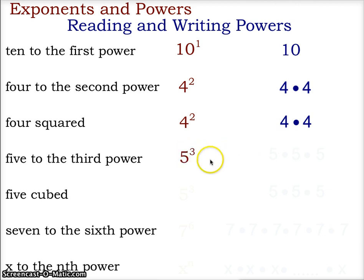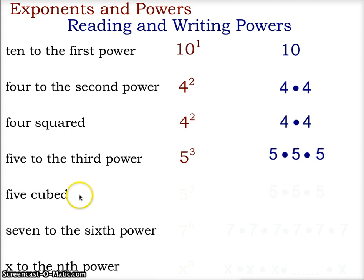Our next example is 5 to the third power. 5 is the base and 3 is the exponent, giving us the expression 5 times 5 times 5. The third power can also be stated as 'cubed,' so 5 cubed would also be represented as 5 to the third power, with 5 being the base, 3 being the exponent, and giving us the expression 5 times 5 times 5.